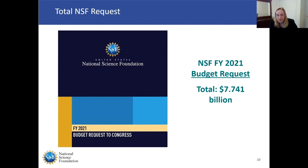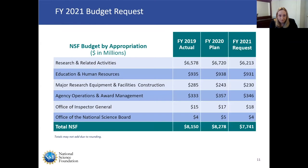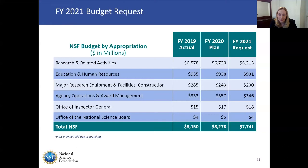NSF has six budget accounts. Three are programmatic: Research and Related Activities, Education and Human Resources, and Major Research Equipment and Facilities Construction. Three are administrative: Agency Operations and Awards Management, Office of the Inspector General, and Office of the National Science Board. This table shows the most recent funding data available. We just closed out fiscal year 2020 on September 30th and are still working to finalize those numbers. We have FY 2019 actuals, the 2020 plan, and the FY 2021 request of $7.741 billion — a decrease reflective of the administration's broader effort to reduce the deficit, not a specific reduction targeted only at NSF.